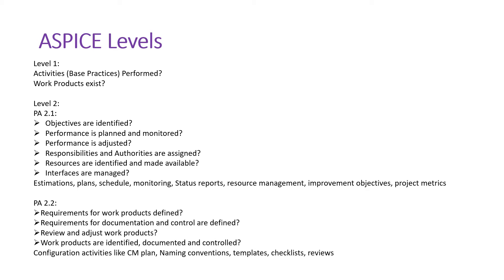PA 2.2 is talking about requirements for work products are defined, requirements for documentation and control are defined, work products are reviewed and adjusted, and work products are identified, documented, and controlled. Configuration activities like configuration management plan, naming conventions, templates, checklists, and reviews all fall under this process area. Level 2 is called 'managed,' which means adjusting the performance.